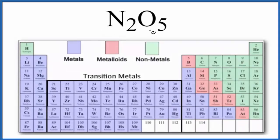The question is whether N2O5 is ionic or covalent. This is dinitrogen pentoxide.